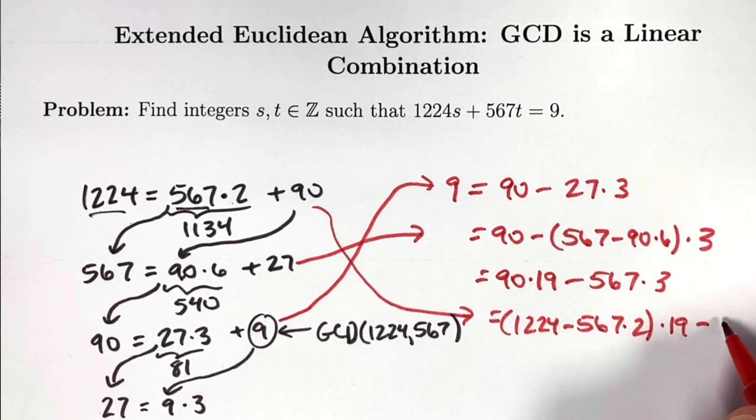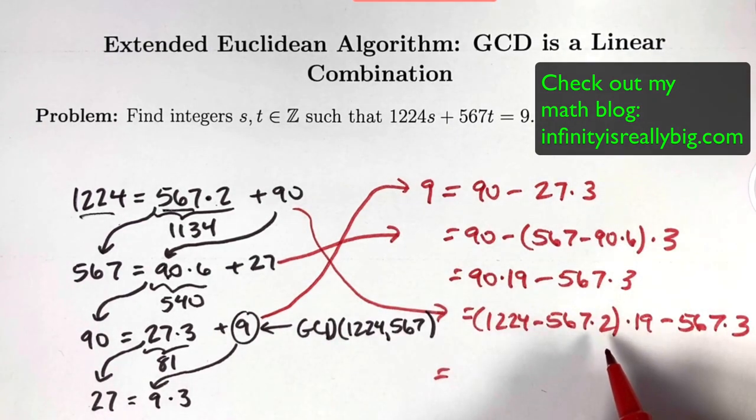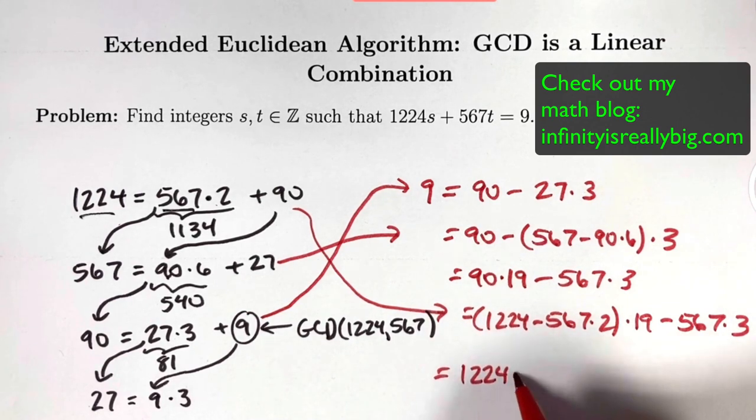Also, don't forget to subtract 567 times 3. Now simplify. What is s? S is the multiplier of 1224. You can see that's going to be 19. 1224 times 19.